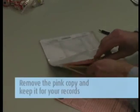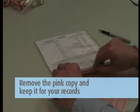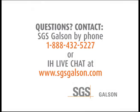Complete the chain of custody form. It is important that you include all the information requested in order to ensure the turnaround time of your samples. Remove the pink copy and keep it for your records. Send the white and yellow copies in with the samples to the lab in the large Ziploc bag. For questions, contact SGS Galson by phone or IH Live Chat.